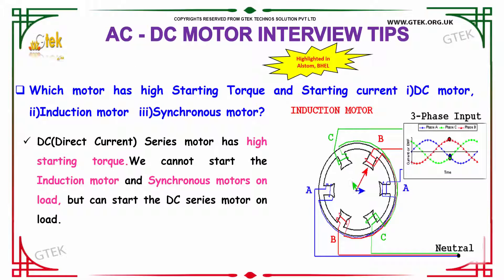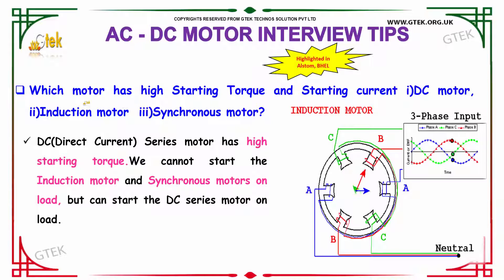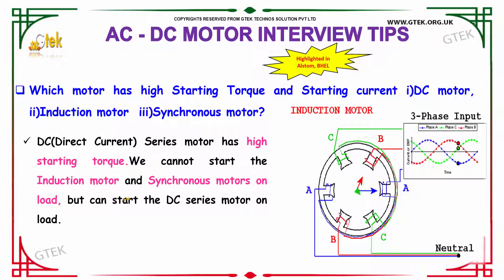Which motor has high starting torque and starting current? We have three options: DC motor, induction motor, and synchronous motor. The answer is DC motor. DC motor has high starting torque and starting current. The reason is that in terms of DC series motor, it has high starting torque. We cannot start the induction motor and synchronous motor on load, but can start the DC series motor on load. So this is the reason that the DC motor has high starting torque and starting current compared to the induction and synchronous motor.